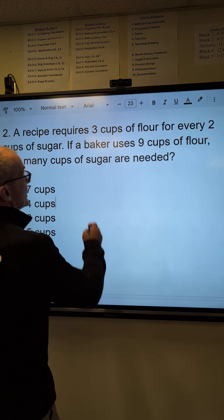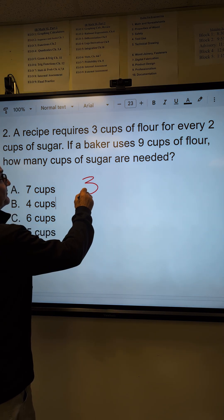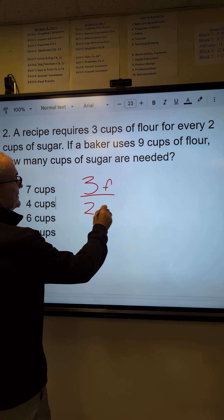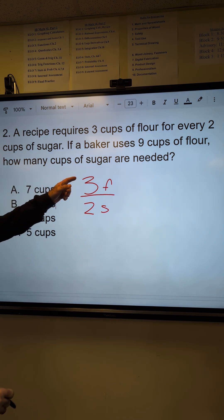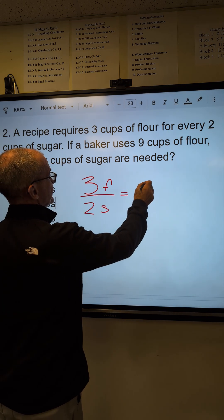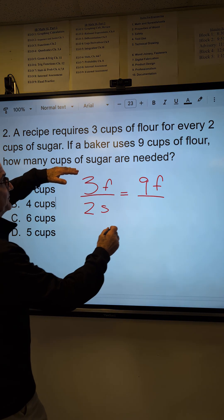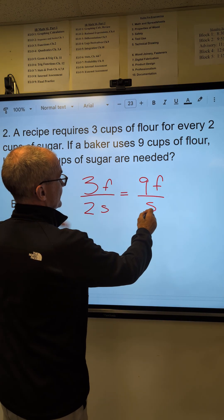A recipe requires three cups of flour for every two cups of sugar. If a baker uses nine cups of flour, how many cups of sugar are needed?